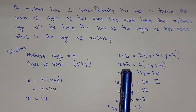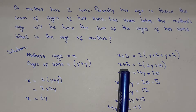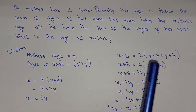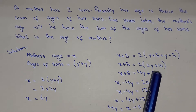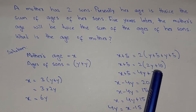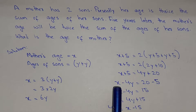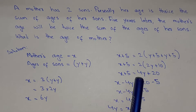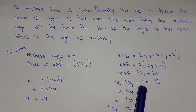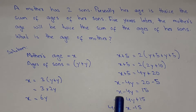We will solve it. So x plus 5 equals 2 into 2y plus 10, which gives x plus 5 equals 4y plus 20. Bringing 4y to the left-hand side: x minus 4y equals 20. Bringing plus 5 to the right-hand side as minus 5: x minus 4y equals 15.